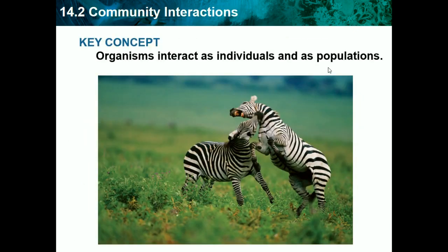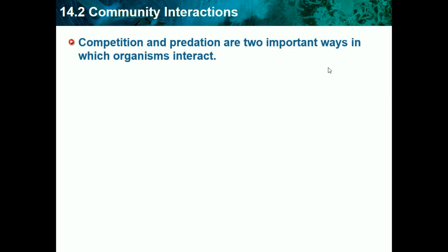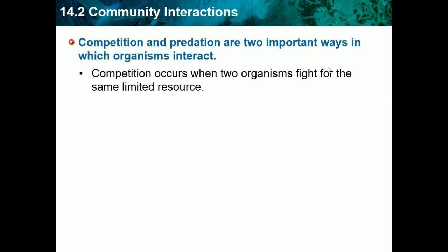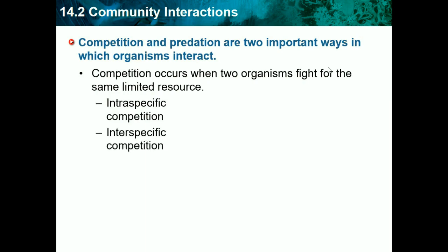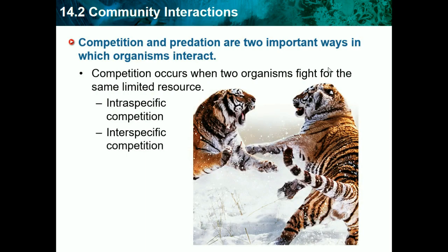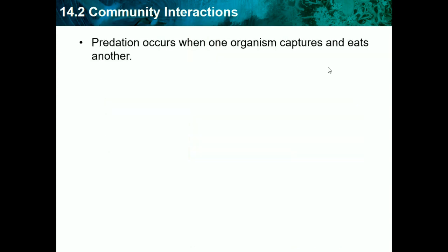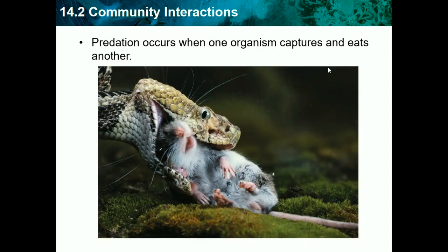Moving to 14.2, community interactions. Organisms interact as individuals and as populations. Competition and predation are two important ways in which organisms interact. Competition occurs when two organisms fight for the same limited resource — these limited resources help them survive. Predation occurs when one organism captures and eats another.